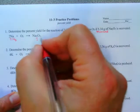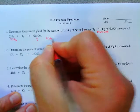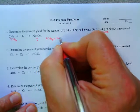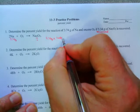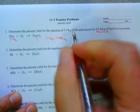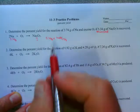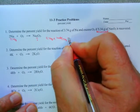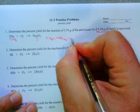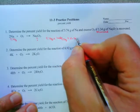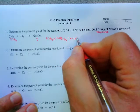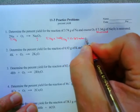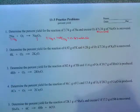So first off, 3.74 grams times one mole over 23 grams. So this will be our step one - go to moles. Okay, and that'll be 0.163 moles of sodium. Okay, so that's our step one.